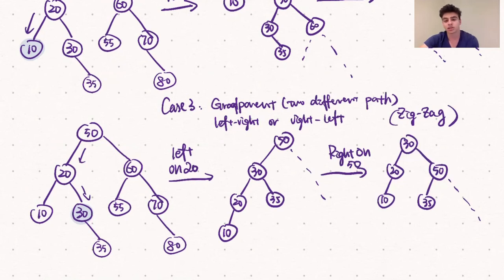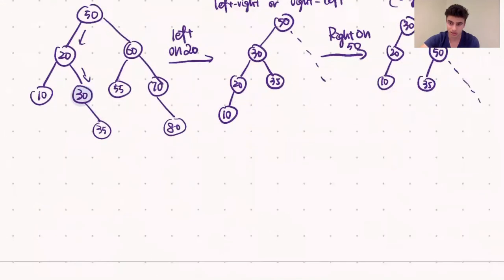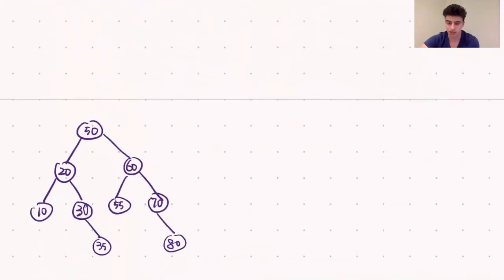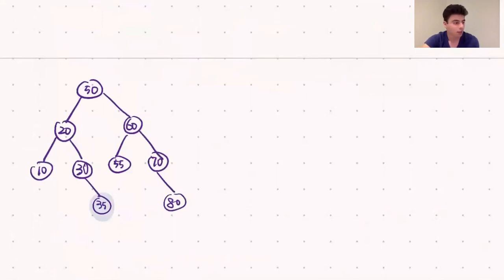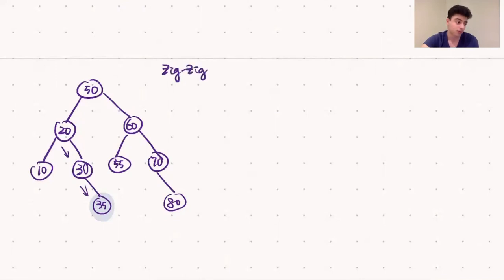Let's look at an example that uses a combination of zig-zig and zig operations. We want to splay node 35 to the root. Working from the bottom up, to splay 35 to its grandparent rooted at 20, we have to perform a zig-zig, meaning two left rotations. After 35 becomes the root of that subtree, to get it to the root of the full tree, we perform a zig operation — a right rotation of 50.